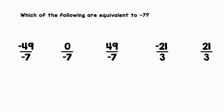Which of the following are equivalent to negative 7? Let's start at the left. Negative 49 over negative 7 can be rewritten as negative 49 divided by negative 7. That equals positive 7. So no, it's not equivalent to negative 7.